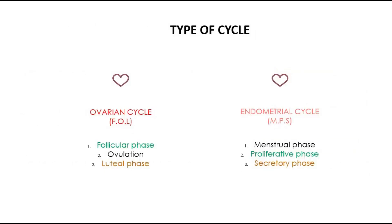There are two types of cycles during menstruation. The first is the ovarian cycle, which consists of three phases: the follicular phase, ovulation phase, and luteal phase. The endometrial cycle also has three phases: the menstrual phase, proliferative phase, and secretory phase. The phases highlighted in green represent the oestrogen phase, whereas the orange color represents the progesterone phase.